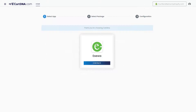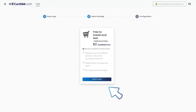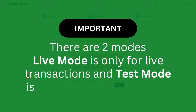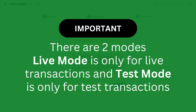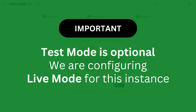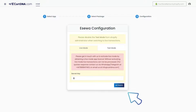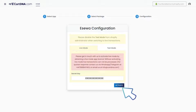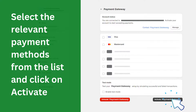Let's configure the payment app. Click on the continue button to go to the next step, then click on the select plan button. Important: there are two modes — live mode is only for live transactions and test mode is only for test transactions. Test mode is optional. We are configuring live mode for this instance. Enter the credentials extracted from your e-sore payment account and click on activate. Select the relevant payment methods from the list and click on activate.